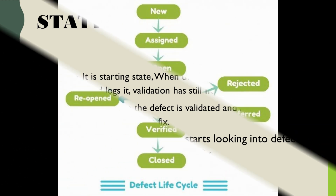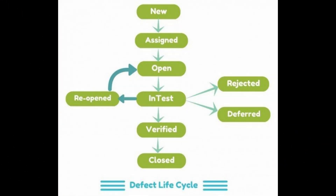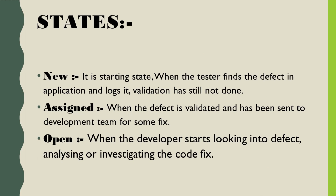The second state is assigned. This is the next stage after the new state. The state of defect is changed to assigned when it is validated by the test lead and has been sent to the development team for a fix.